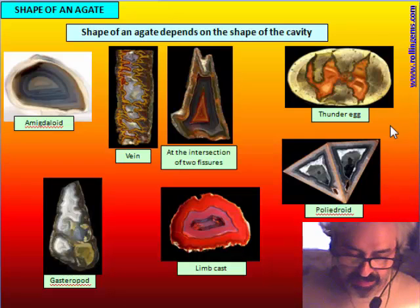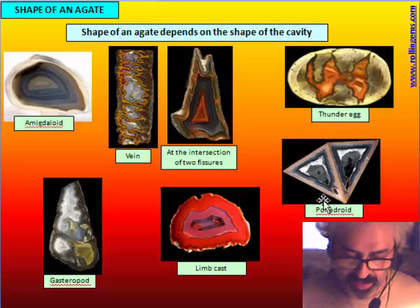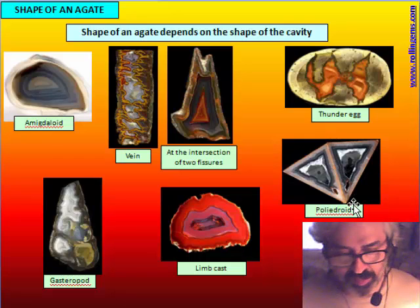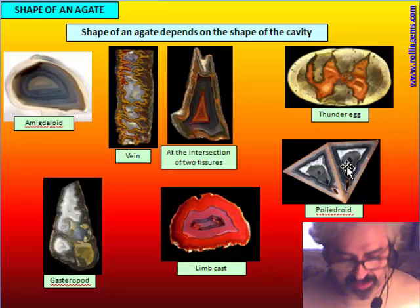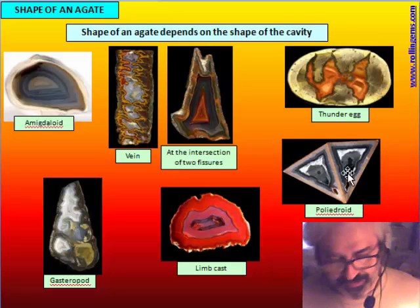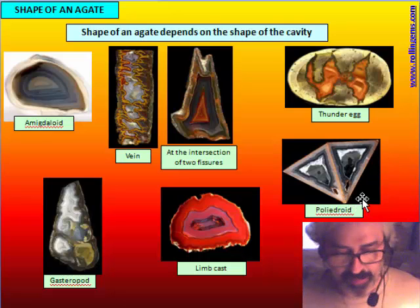A really strange specimen is found in Brazil — a deposit called polyedroid because the agates have a real polyhedral shape. When cut, they usually show triangular or square cross-sections. This is thought to result from growth between large sheet-like crystals of anhydrite, though this is not confirmed because no traces of the crystals have been found. It is a very unusual deposit, found in just one place in Brazil.